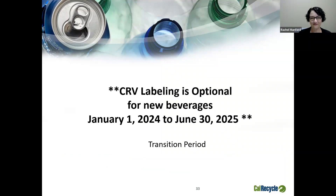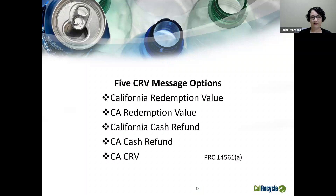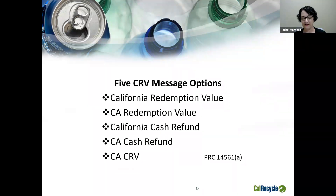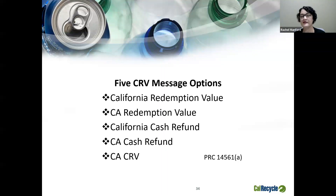CRV labeling is optional for new beverages January 1st, 2024 to June 30th, 2025 — this is our transition period. There are five accepted CRV message options. A beverage manufacturer as defined by the BCRP shall clearly indicate on all beverage containers pursuant to Public Resources Code 14561(A) — no monetary value should be included with the message. The five accepted options are: California Redemption Value, CA Redemption Value, California Cash Refund, CA Cash Refund, and CA CRV.